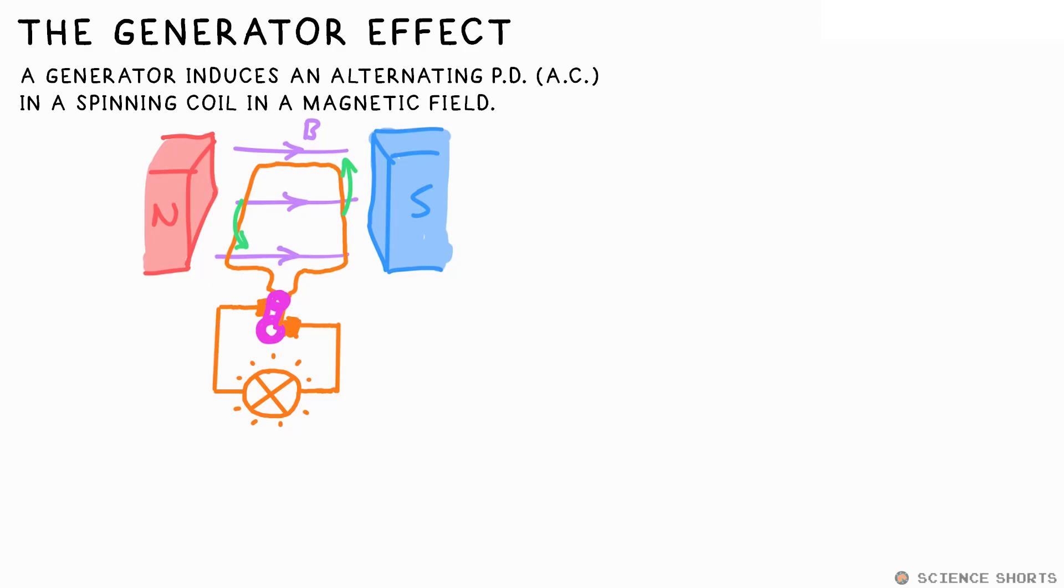A generator itself looks like a motor. You turn the coil and a potential will be induced in the coil. This is basically how power stations work. The steam made from burning fuels or nuclear fission turns the turbine, which turns this coil in the generator. A generator doesn't need a split ring commutator. It still works. All that it means is that it's an alternating PD that's induced, or alternating current AC is produced.